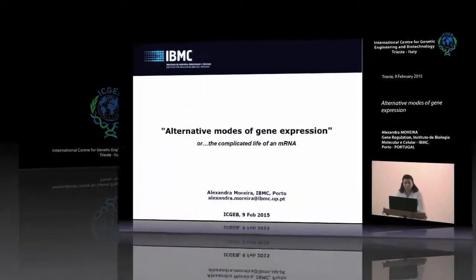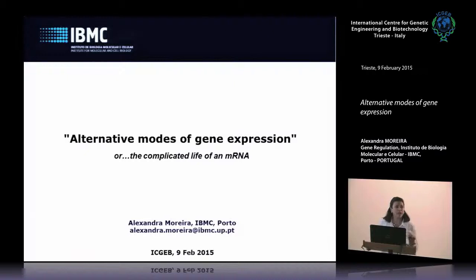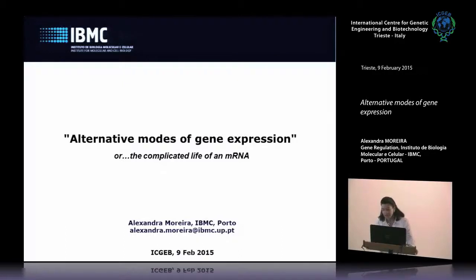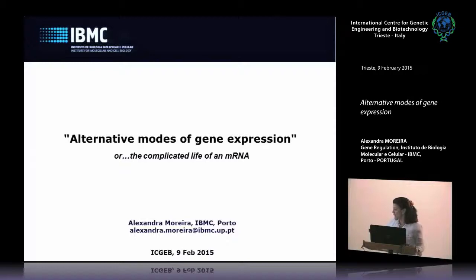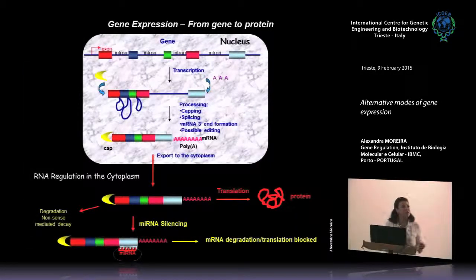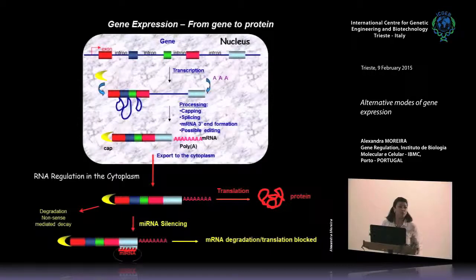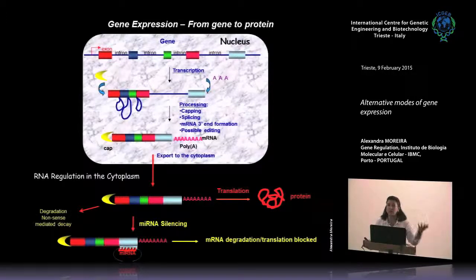What I'm going to tell you about today is two of the stories going on in the lab. We are interested in mechanisms that regulate alternative polyadenylation and alternative splicing in a way that they can regulate gene expression. Because some people in the audience may not be familiar with some of the concepts, I'm going to give a brief introduction on what gene expression is. With all these high-throughput genomic studies, people tend to forget the several steps during the life of an mRNA that give rise to a protein.